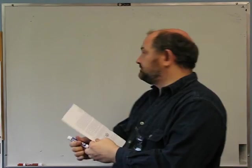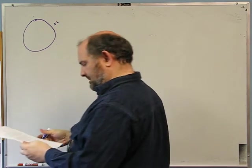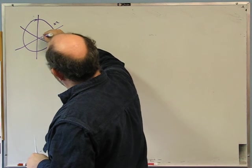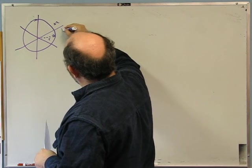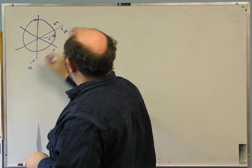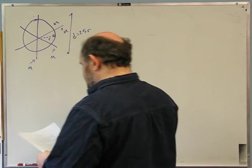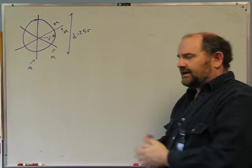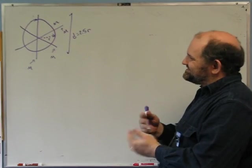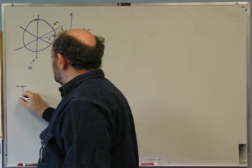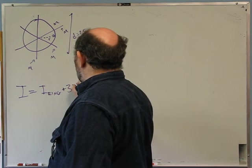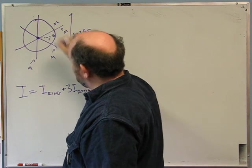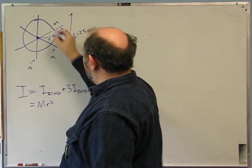Problem 3: a wheel composed of a ring of mass M and three rods, each of mass M. The ring has radius r; each rod has length d equals 2.5r. First question: what is the moment of inertia of this wheel? For a composite object, the total moment of inertia is the sum of the pieces: the moment of inertia of the ring plus three times the moment of inertia of one rod.